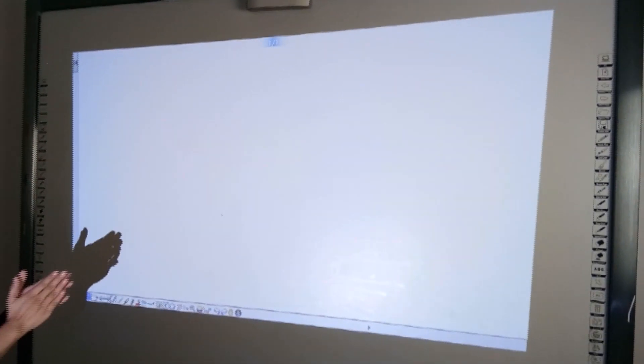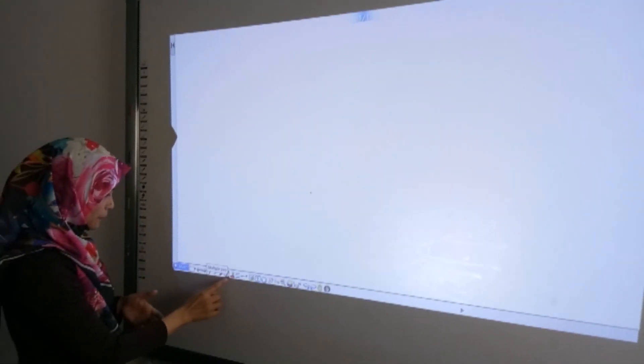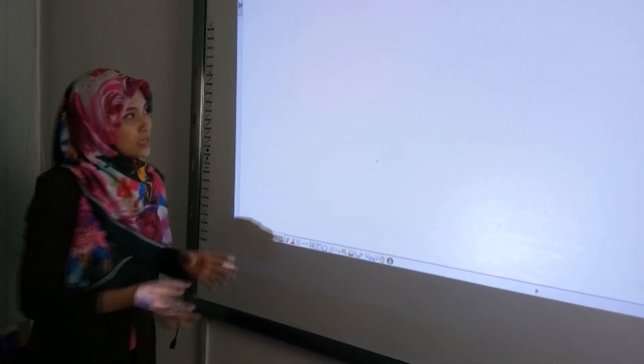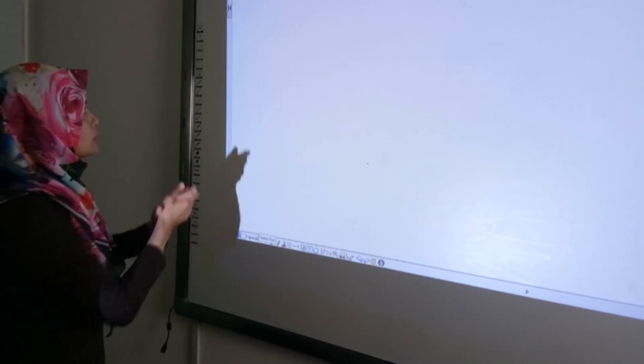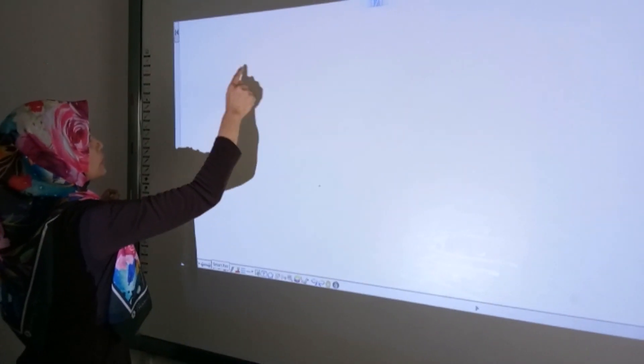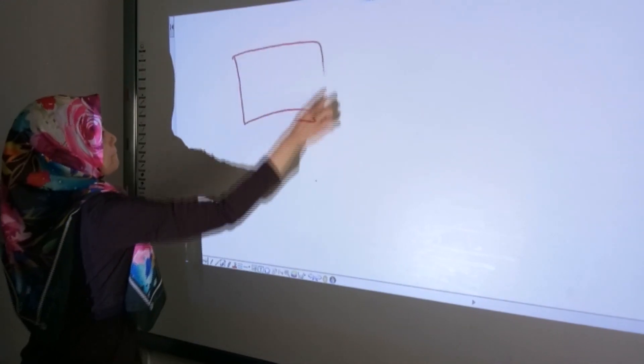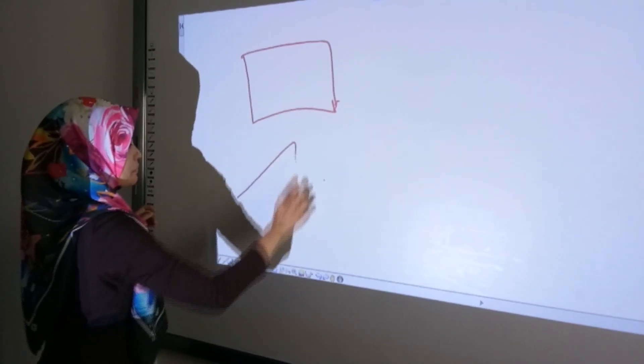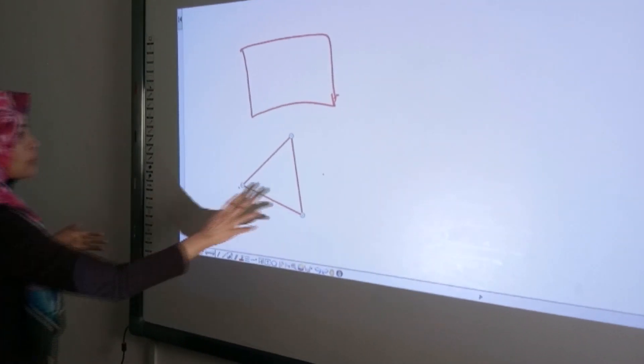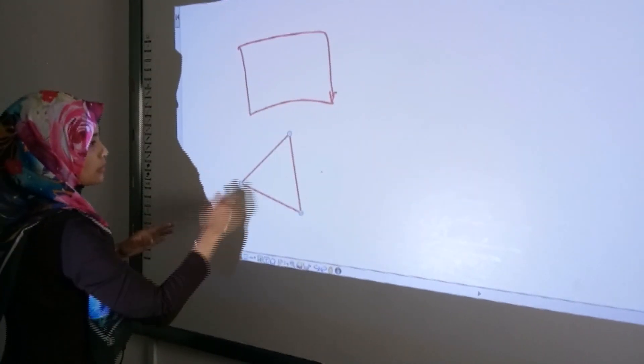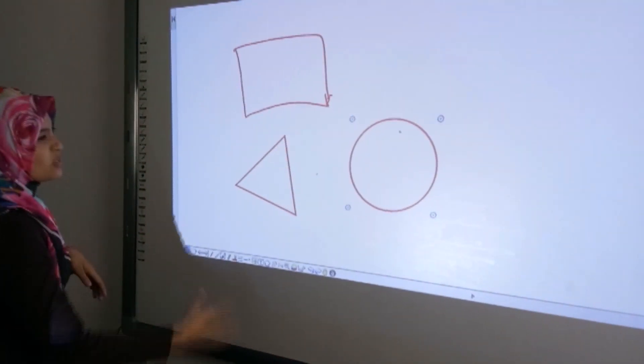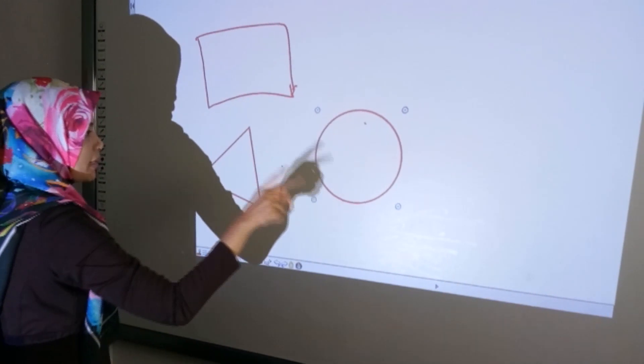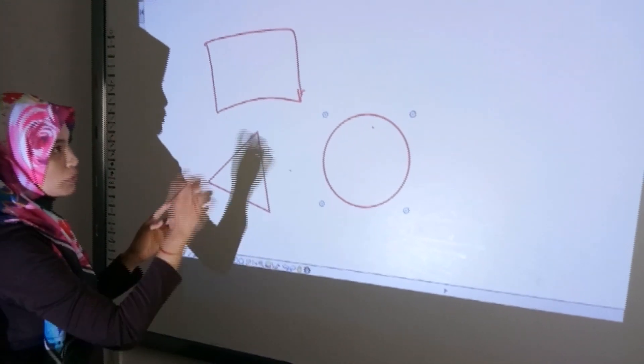Saya nak tunjuk contoh smart pen. Smart pen ni dia guna untuk lukisan geometri. Contoh kalau cikgu matematik nak mengajar bentuk-bentuk geometri. Contoh saya tunjuk garisan macam ni. Dia otomatik terus jadi macam ni. Kalau bulat, dia akan terus cantik menisai. Tapi kena pastikan, garisan tu bertembung.